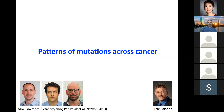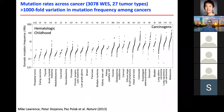Now that we had a new mutation caller, we decided to look at mutations across cancer. Together with Eric Lander, Mike Lawrence, Peter Stoyanov, and Pat Pollack, we studied different cancer types. Here's what we saw across 3,000 whole exomes from 27 tumor types. Every dot here is a different patient, and the somatic mutation rate varies dramatically across individuals, with huge variation even within each tumor type.